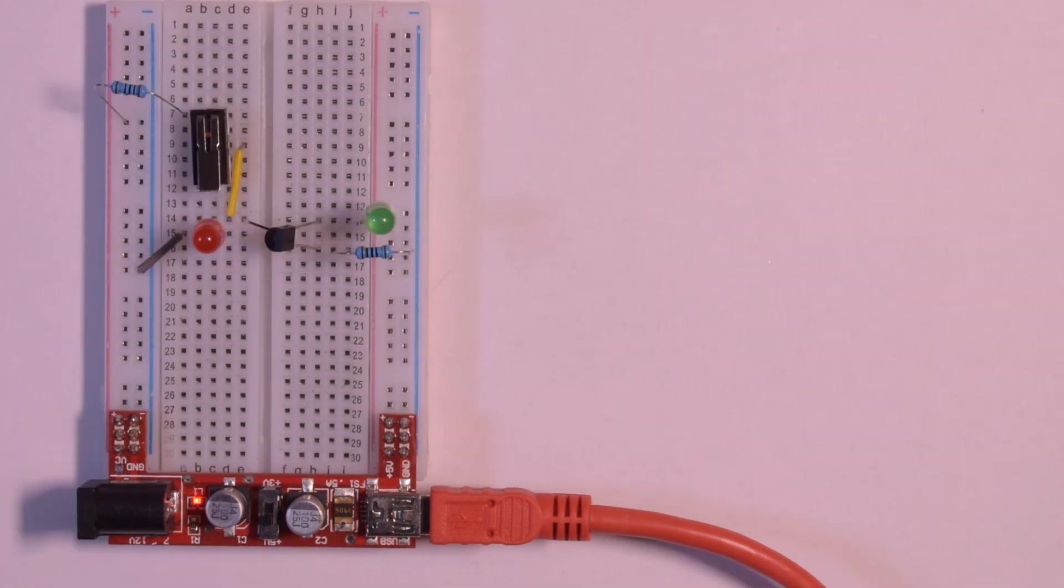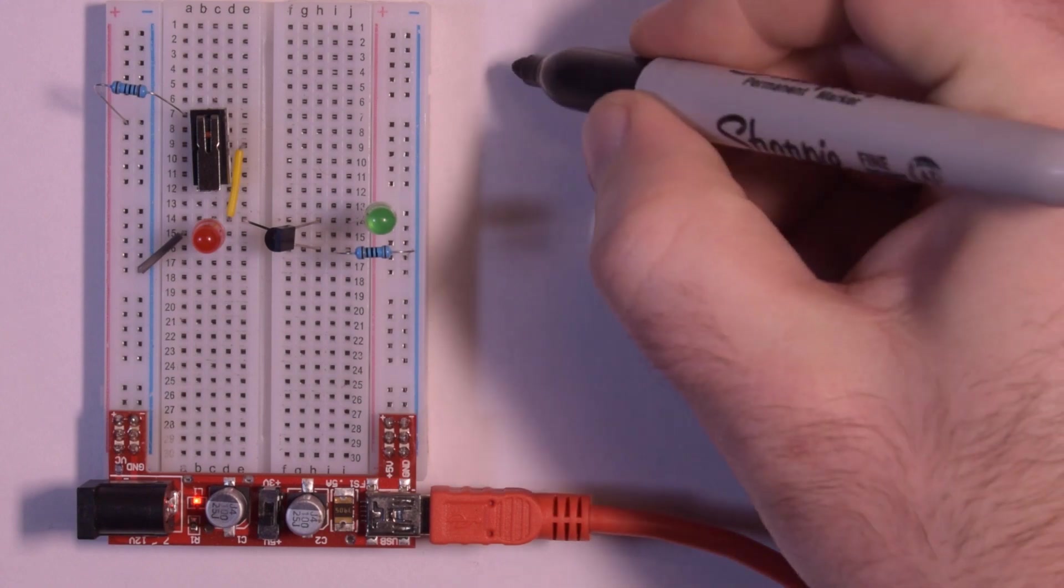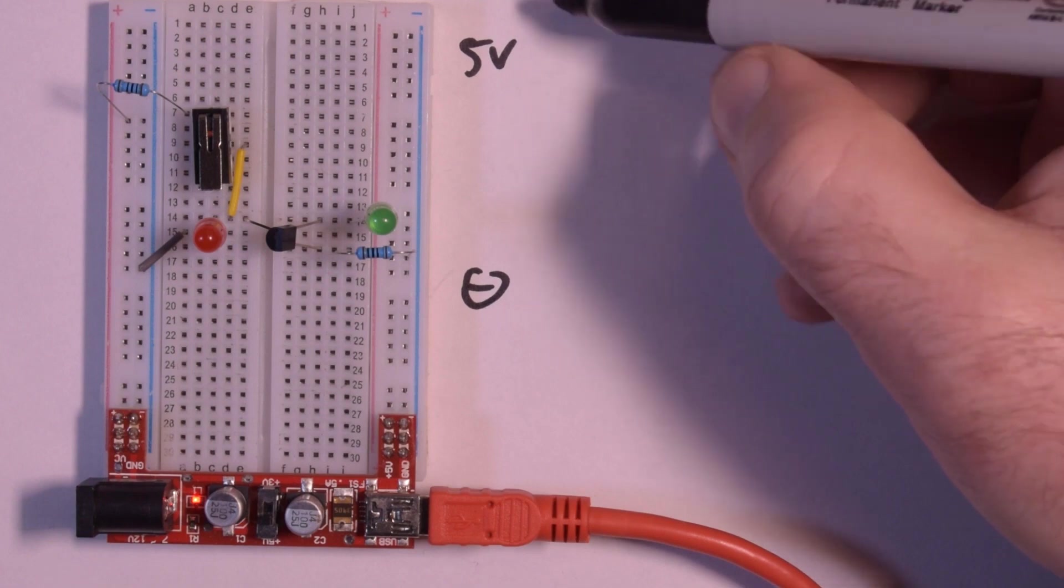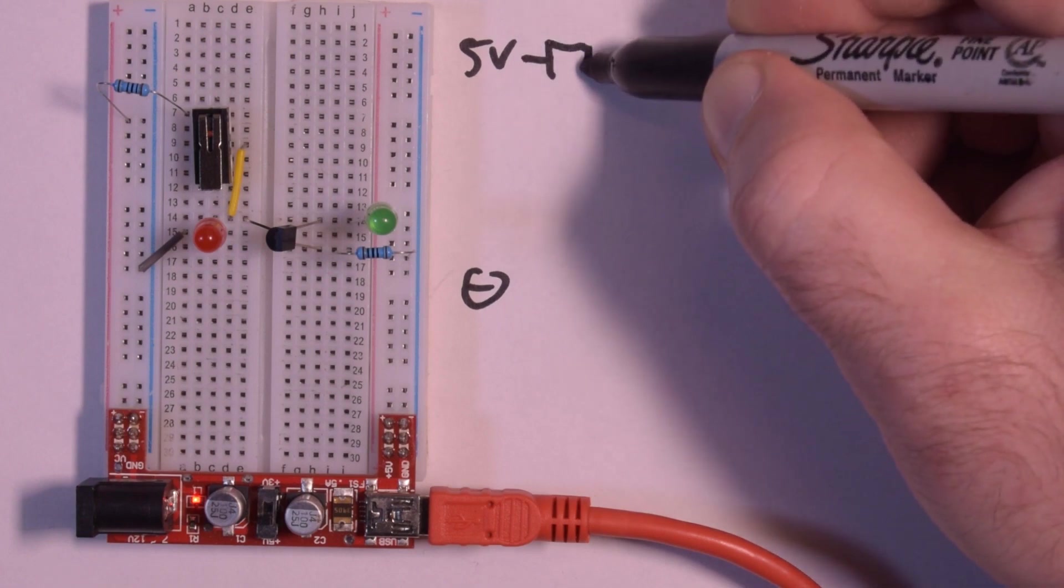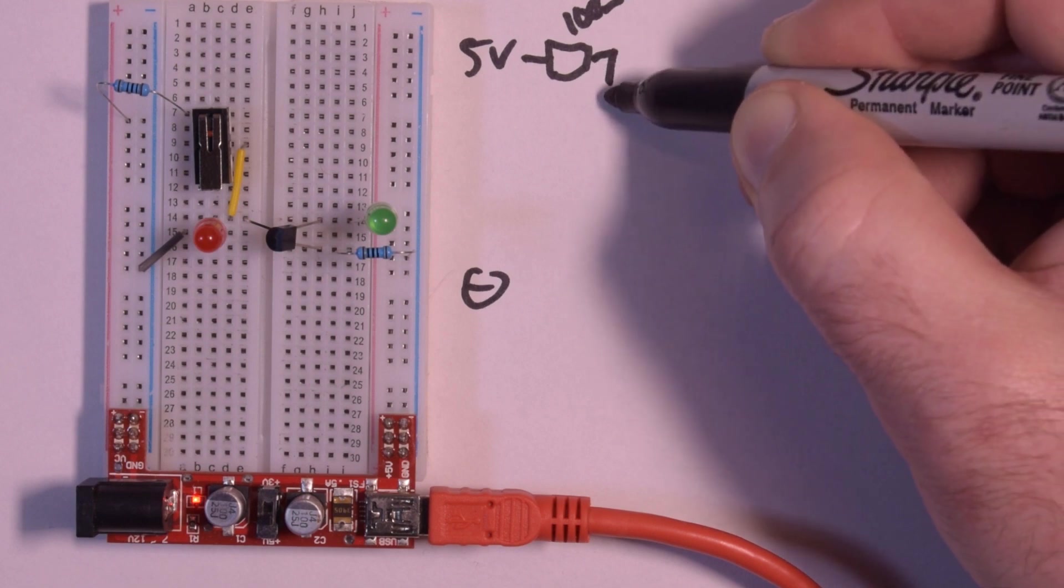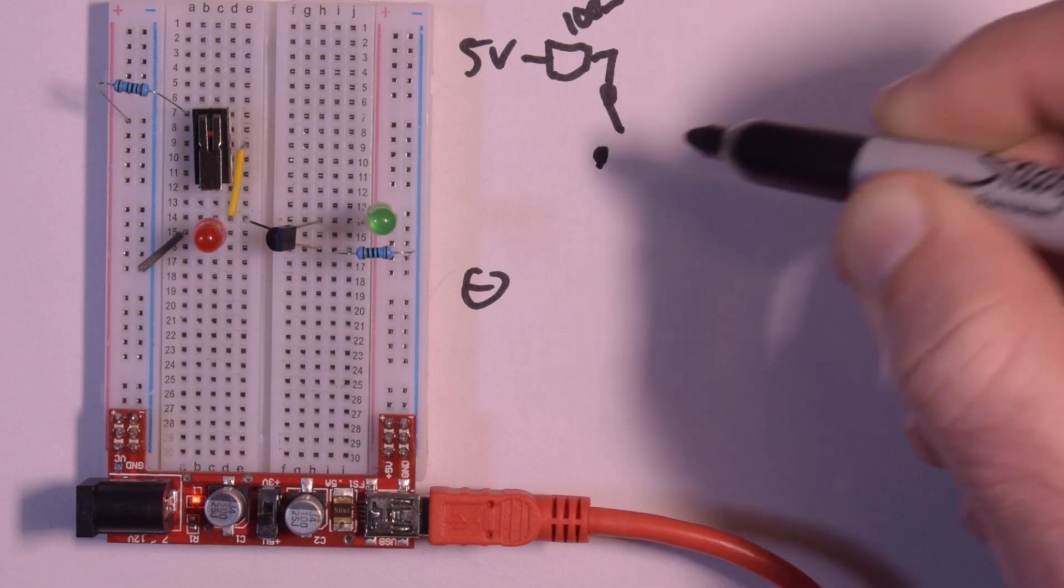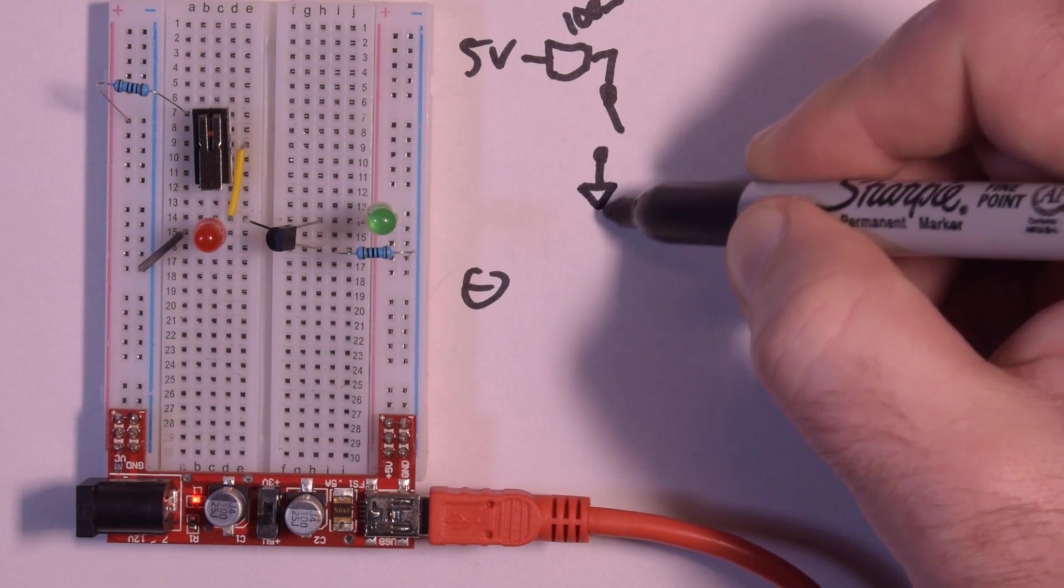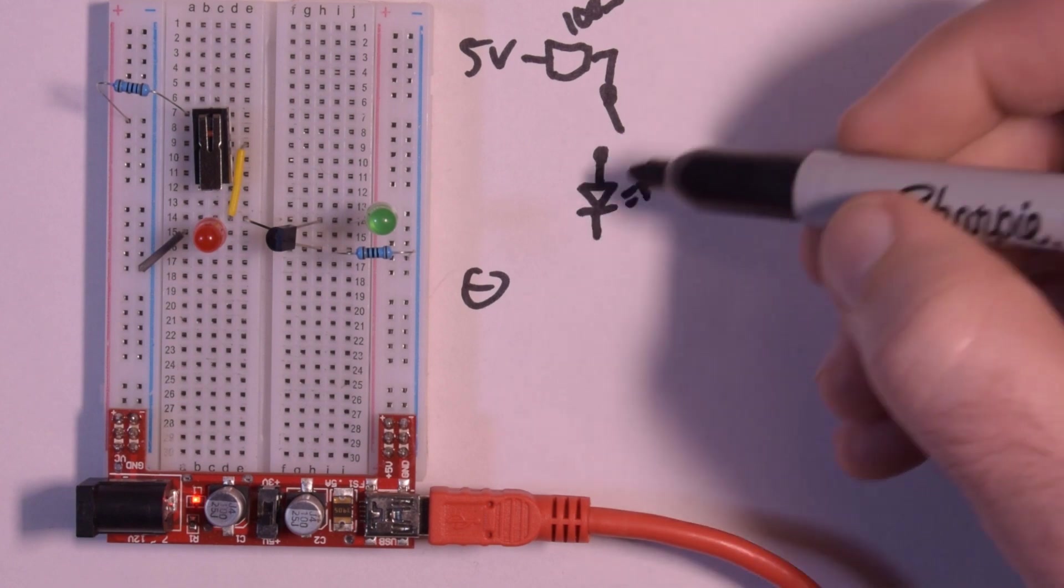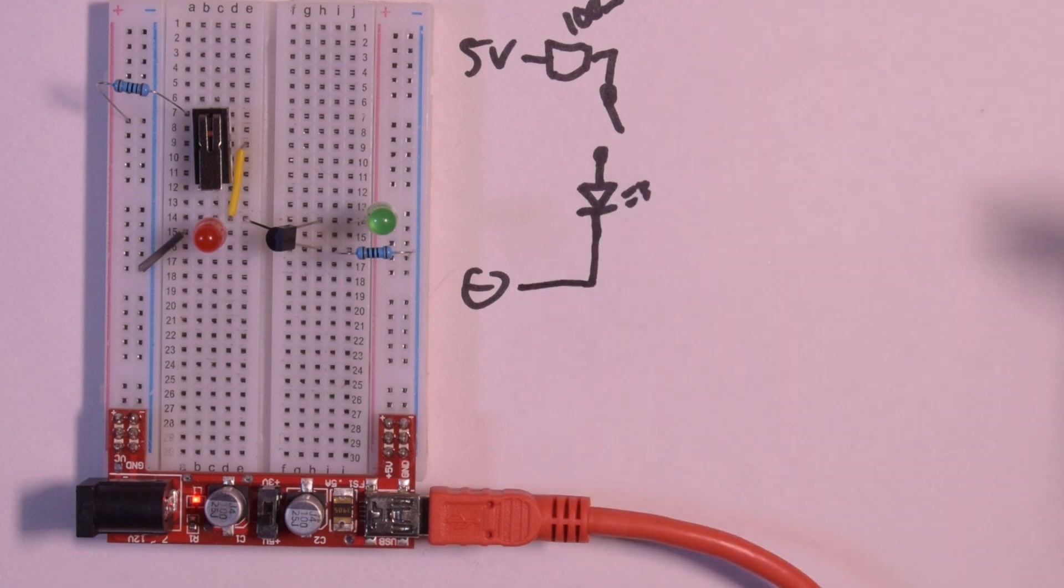Now what happens if we want this side to control this side? Well let me re-conjigger the circuit a little bit. My circuit is now re-conjiggered but not by that much. So we still have our 5 volt here and our ground here, and we still have our 100 ohm resistor.